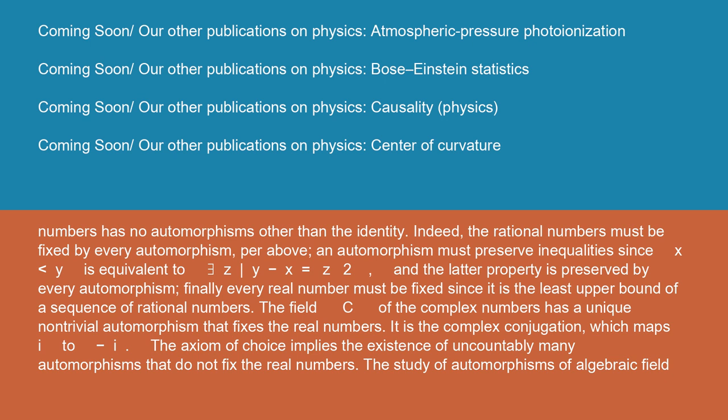The field C of the complex numbers has a unique non-trivial automorphism that fixes the real numbers. It is the complex conjugation which maps i to -i. The axiom of choice implies the existence of uncountably many automorphisms that do not fix the real numbers.